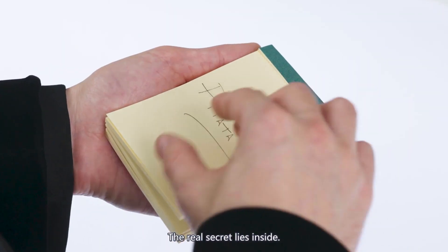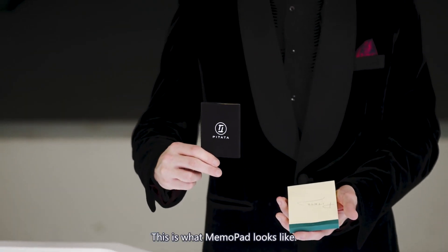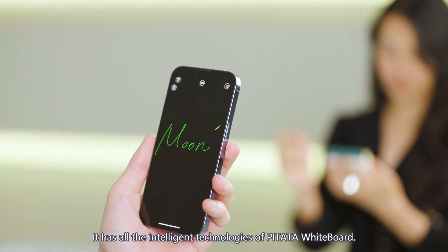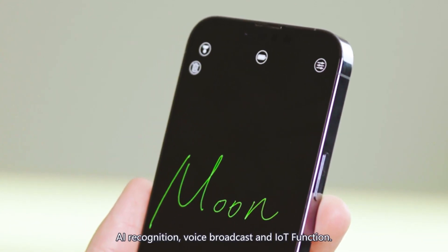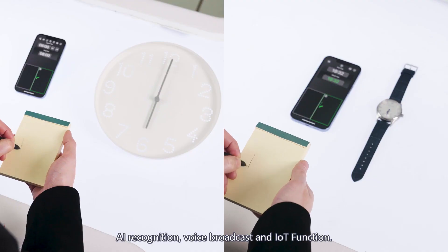The real secret lies inside, the highly integrated impression chip. This is what Memo Pad looks like. It has all the intelligent technologies of PETA Whiteboard: AI recognition, voice broadcast, and IoT function.